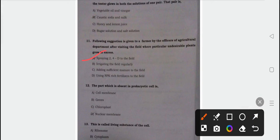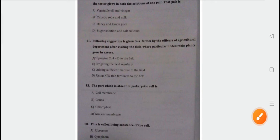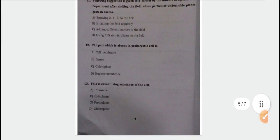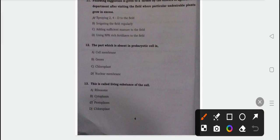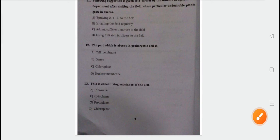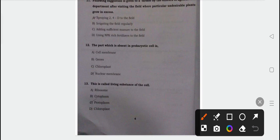The part of which option D is prokaryotic cell: cell membrane, genes, chloroplast, and nuclear membrane. The correct answer is option D, nuclear membrane is the correct answer. This is called living substance of the cell: ribosome, cytoplasm, protoplasm, chloroplast. The correct answer for 13th question is option C.